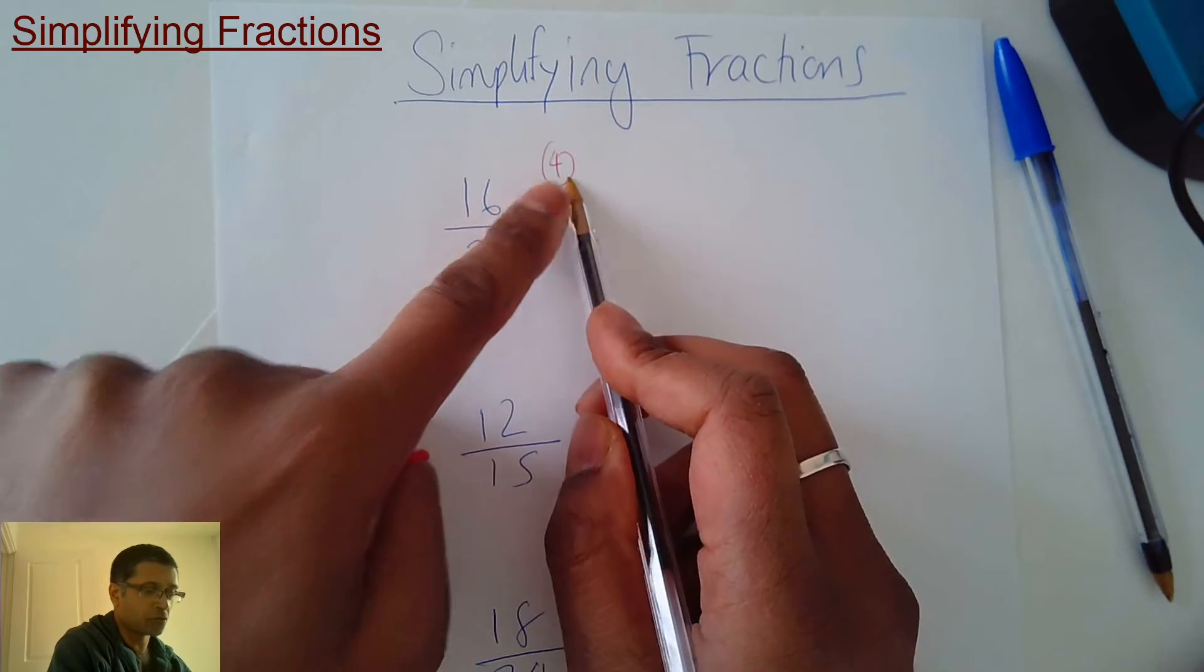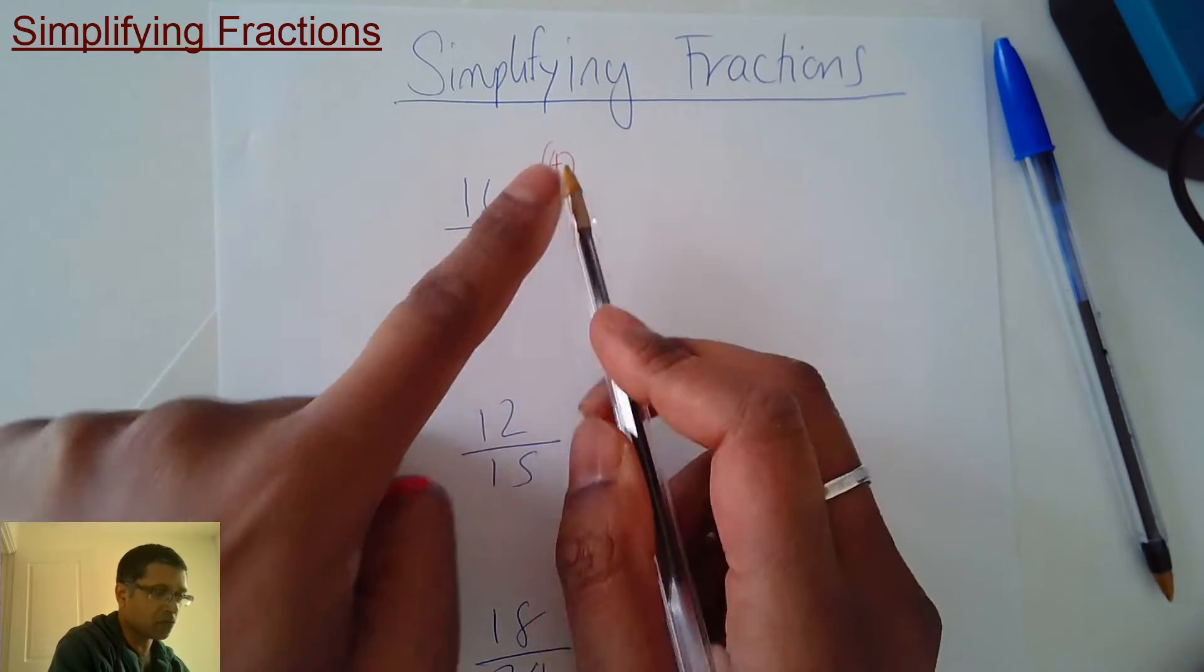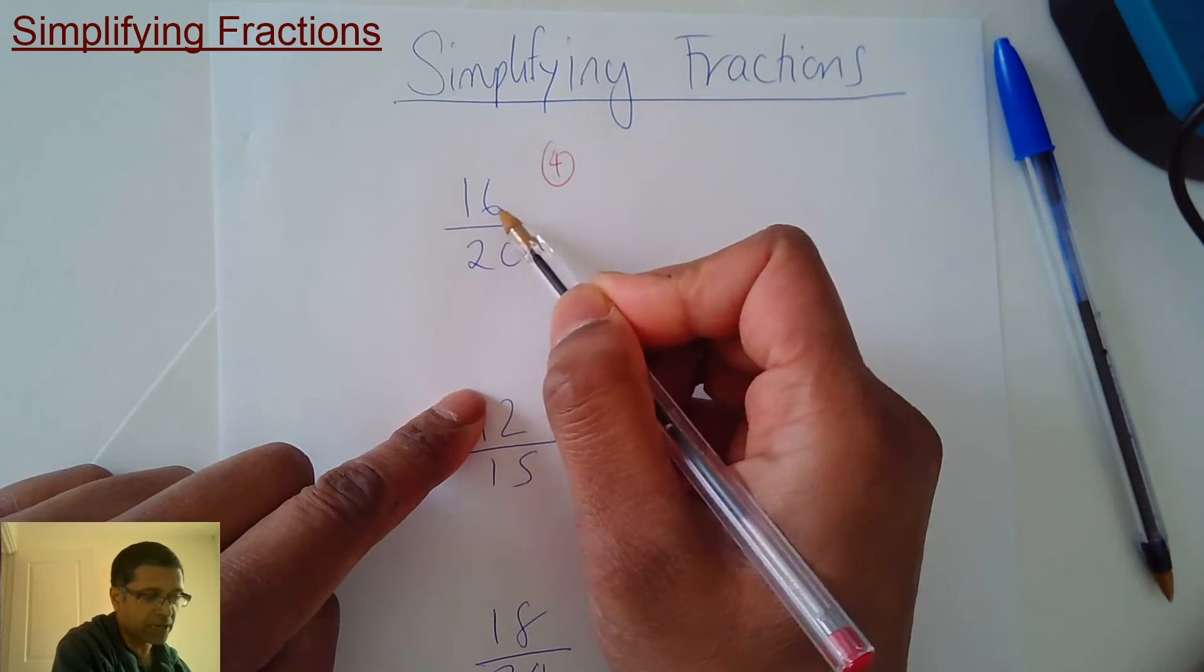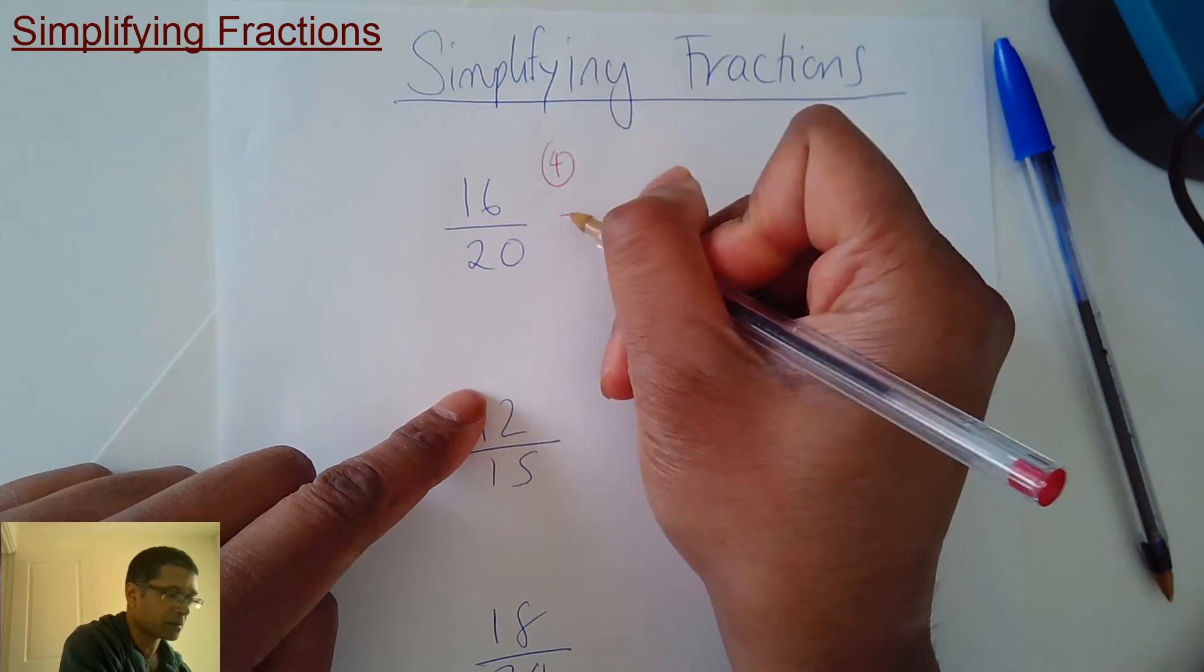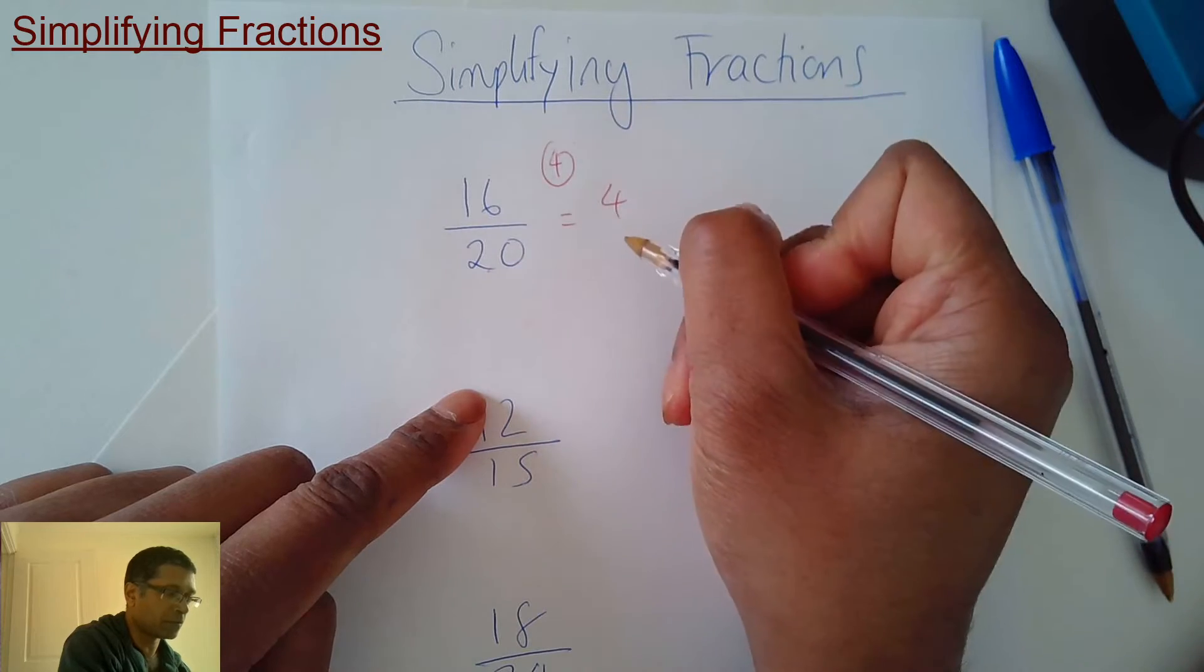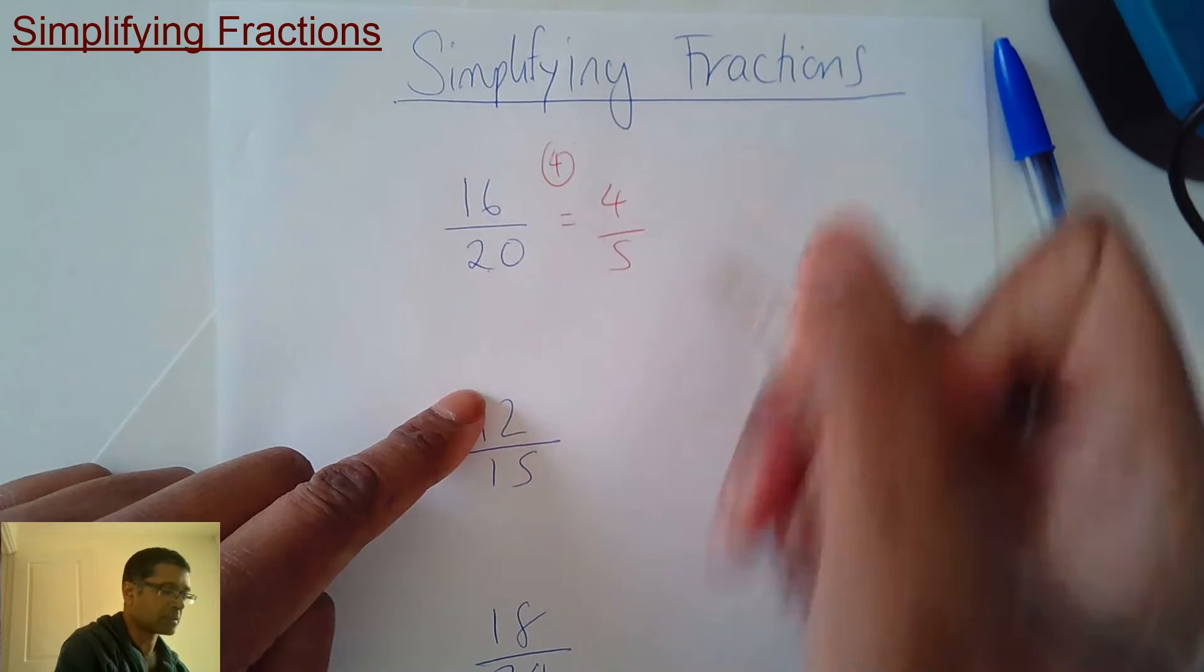Check, 16 is in the 4 times table? Yes. Is 20 in the 4 times table? Correct. So you can simplify it now. 16 divided by 4 is 4. 20 divided by 4 is 5. That's simplified.